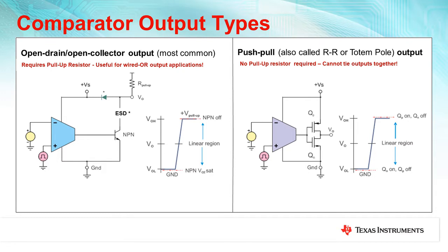Open Collector comparators are built with bipolar transistors, while Open Drain comparators are built with MOSFETs.